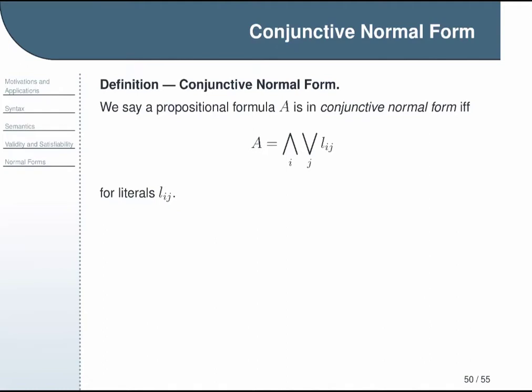I will come back to this expression and break it down in a moment, but first, in case it is helpful to hear another version of that, an equivalent definition is that formula A is in conjunctive normal form if and only if A is a conjunction of disjunctions of literals.